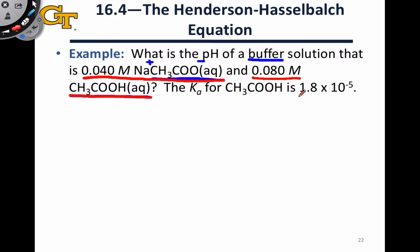The Ka is given as well. It's 1.8 times 10 to the negative 5. That's Ka for the weak acid.